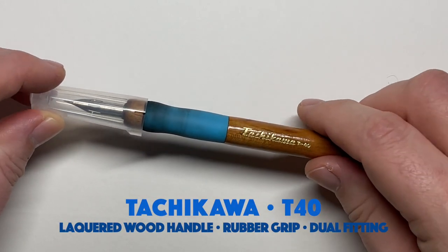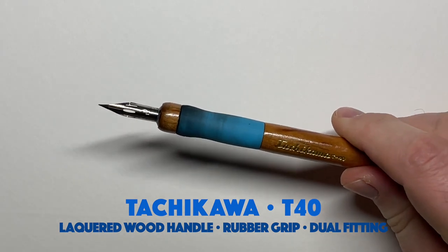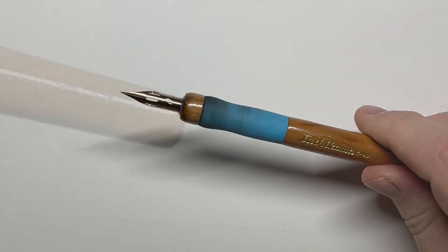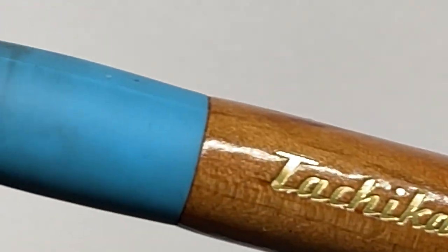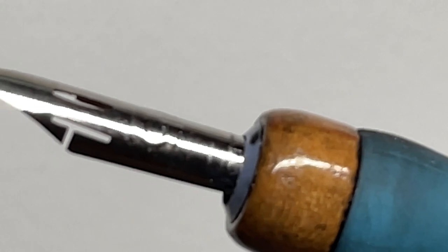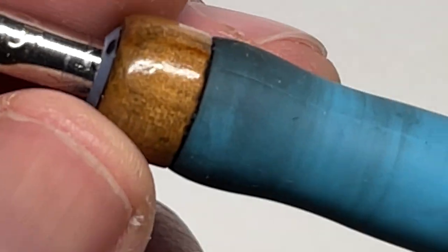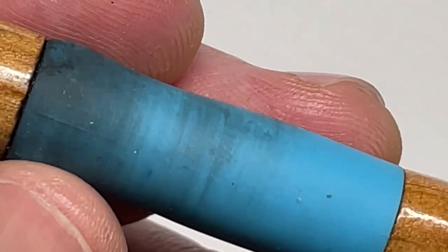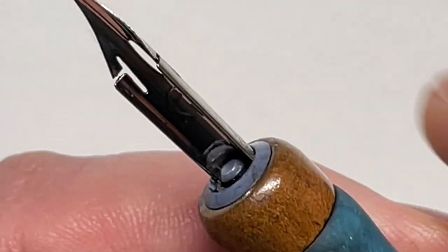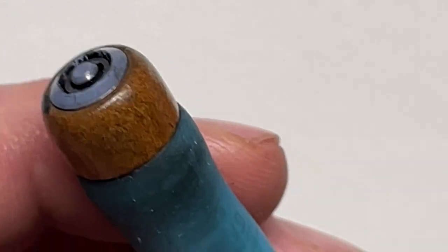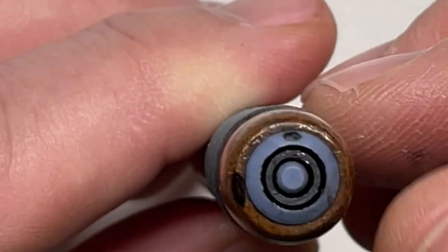Now this is the Tachikawa T40. I bought this a few years ago and I just love this. It's a lacquered wood handle with a rubber grip, really comfortable. If I had to pick any of these dip pens to use, this would be my go-to because even though it's a straight pen, I really just love the way it handles.